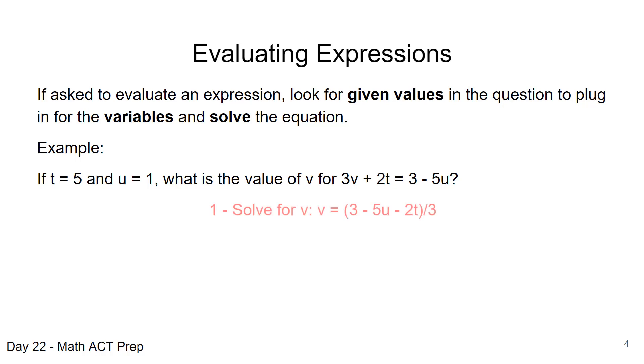So one way you can solve this problem is you can begin by solving for v because that's what we're going to be looking for. So we get the expression, we move the 2t over to the right hand side by subtracting it, and then we need to divide through by 3 so that we just have v. Then we're going to plug in the values for t and u that we were given in the question itself, and when we do that we evaluate and we find that v is equal to negative 4.